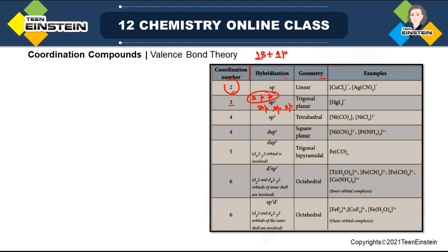Sometimes you will see that under the same coordination number you can have two alternative hybridizations. In that case you have to properly write the electronic configuration of the central metal atom, and depending on the ligand nature we can have either tetrahedral or square planar geometry. It is also dependent on the type of metal and sometimes on the oxidation state of the metal.